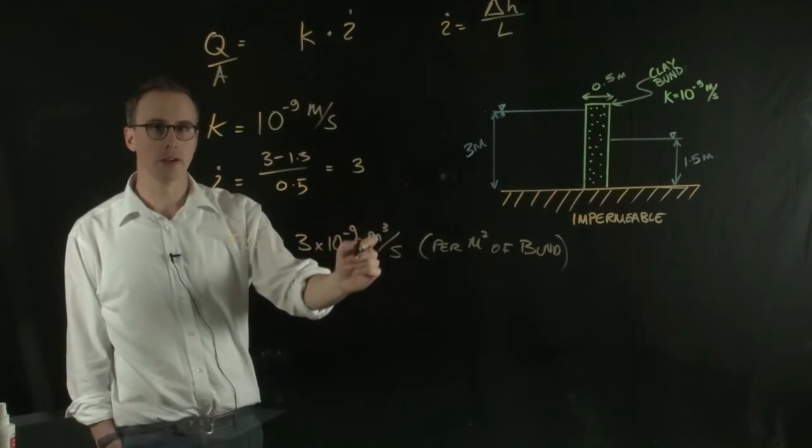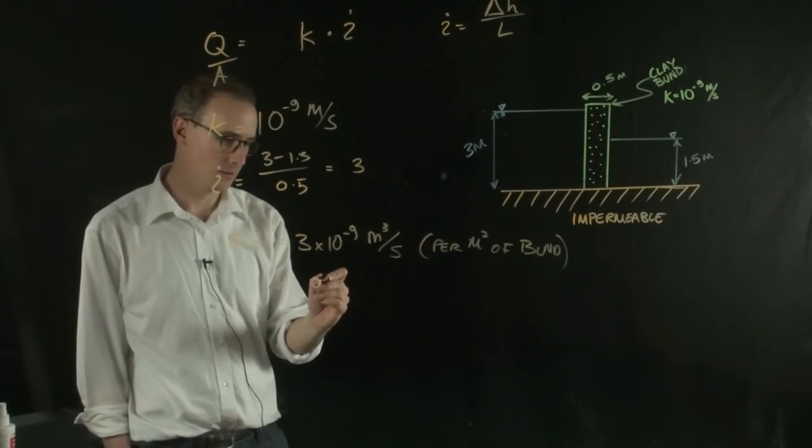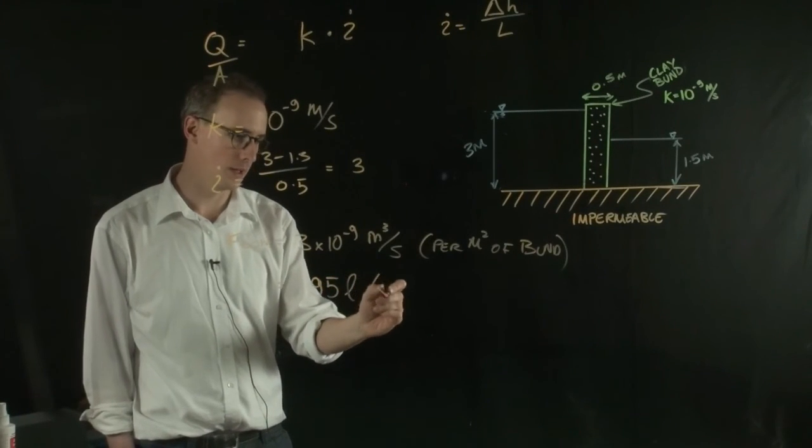This is a bit of an awkward number. So we could also write that as 95 litres per year.